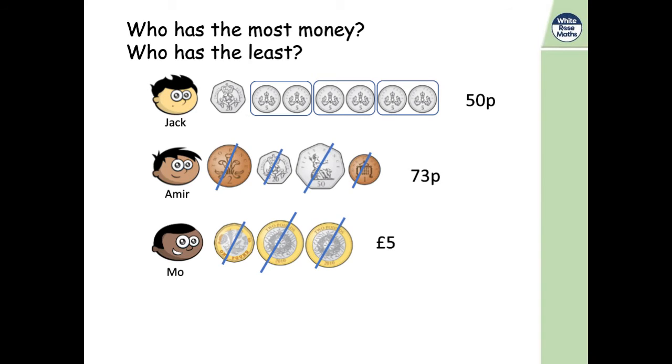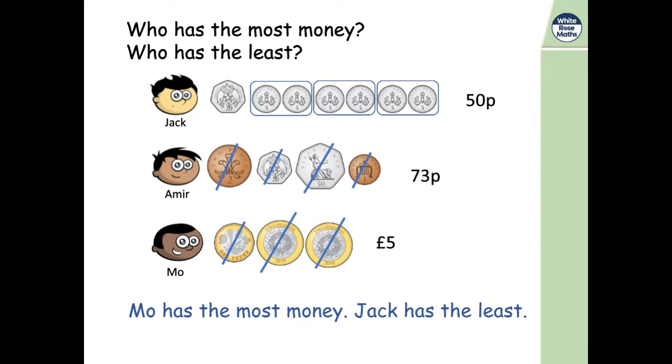Okay, so now we've got the amounts and we've checked them. Who has the most and who has the least? Okay, so Moe has the most, even though he has the fewest coins, they are the greatest value. And Jack, who has the most coins, but the least value. His is only 50 pence.